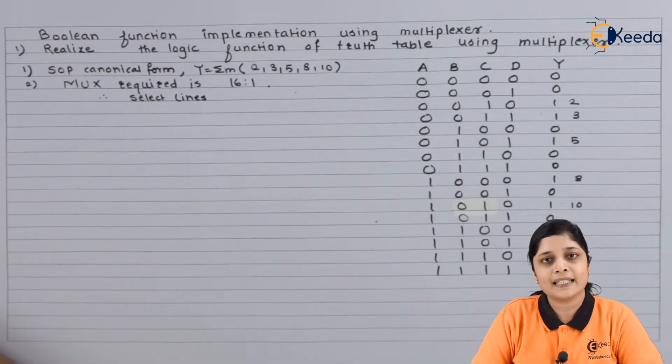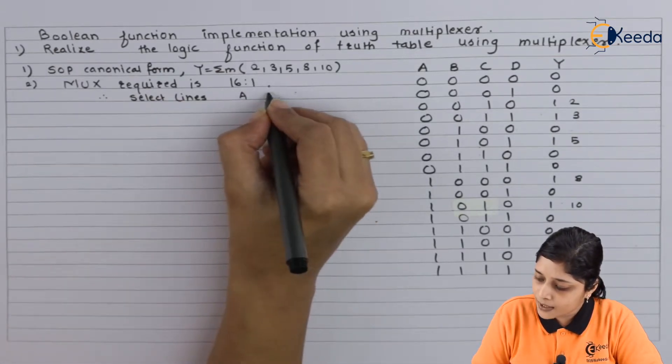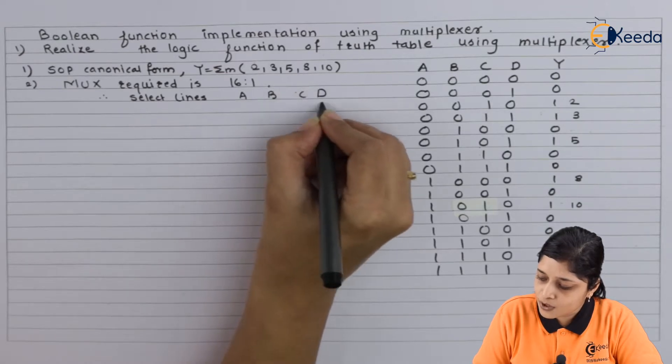Therefore, select lines required are 4. These variables are A, B, C, D, so select lines are S0, S1, S2, and S3.